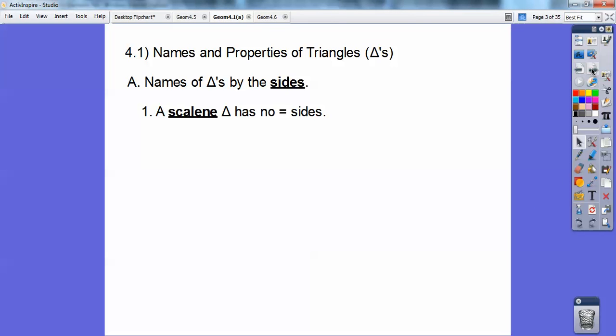A scalene triangle has no equal sides. An isosceles triangle has at least two equal sides, so it could have three equal sides. And an equilateral triangle has three equal sides. So all isosceles triangles are equilateral, but typically if it has two equal sides, we call it isosceles. And if it has three equal sides, we'll call it equilateral.